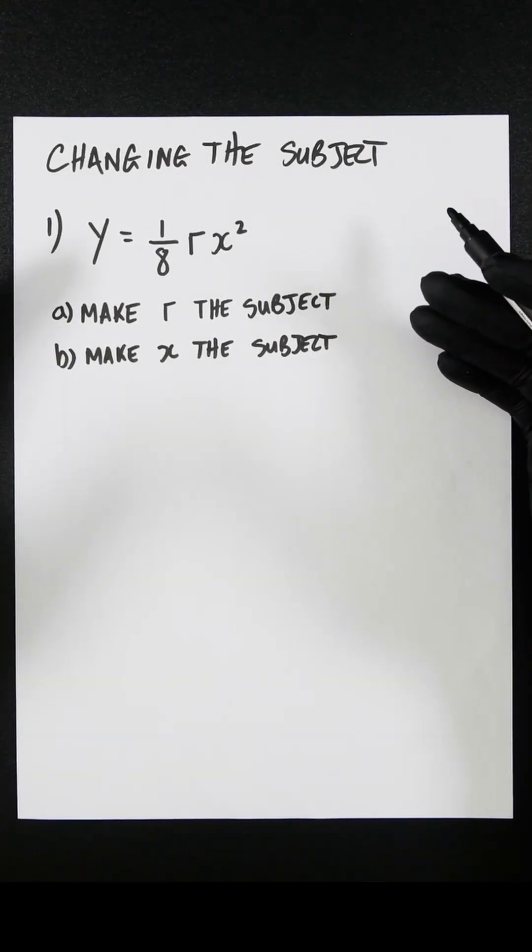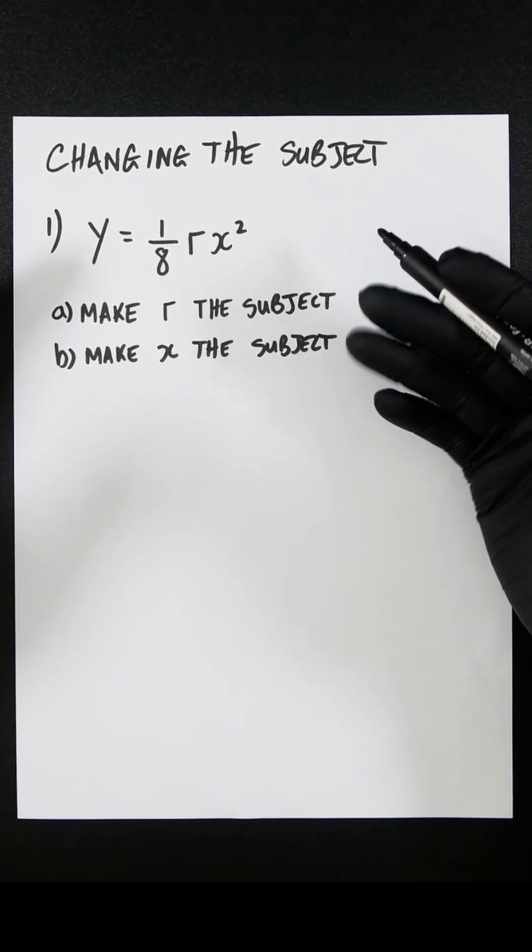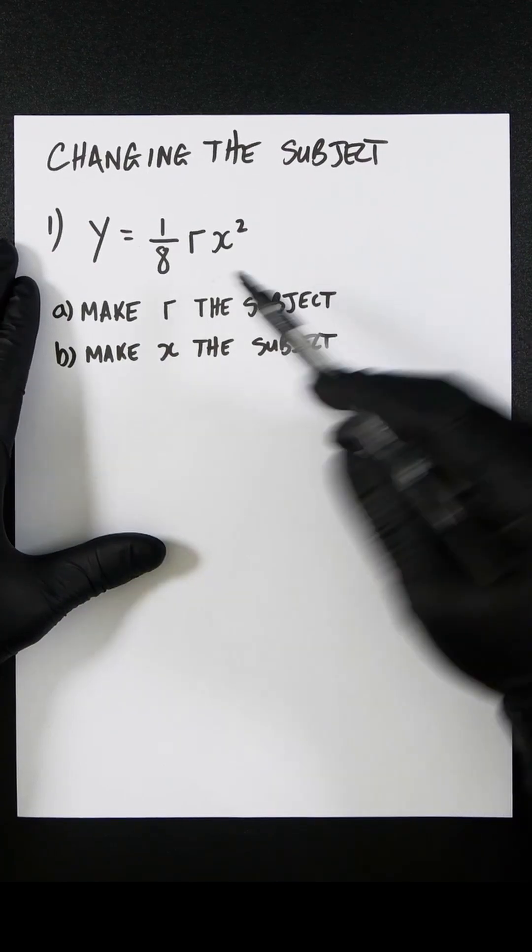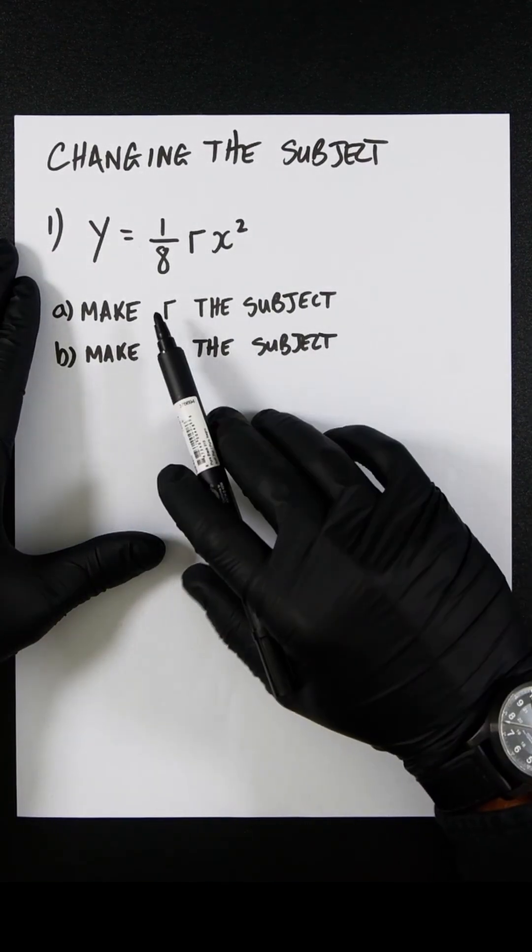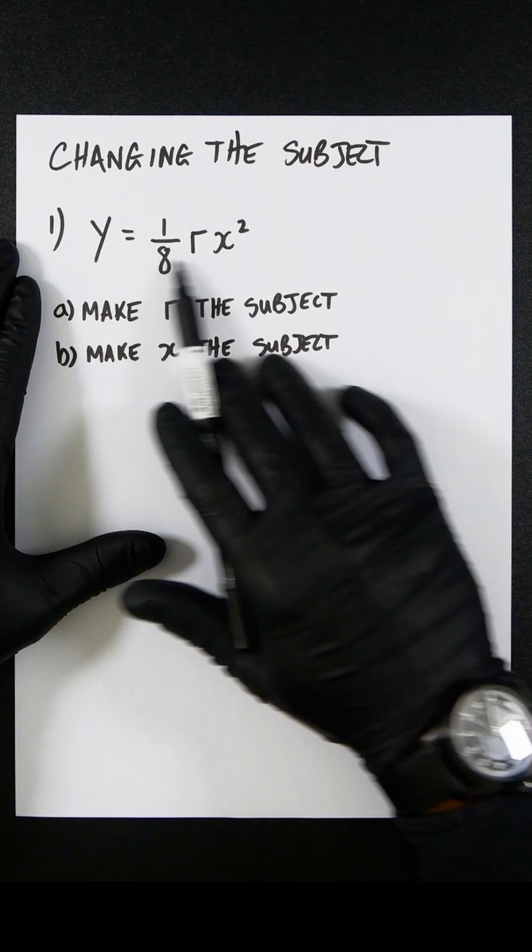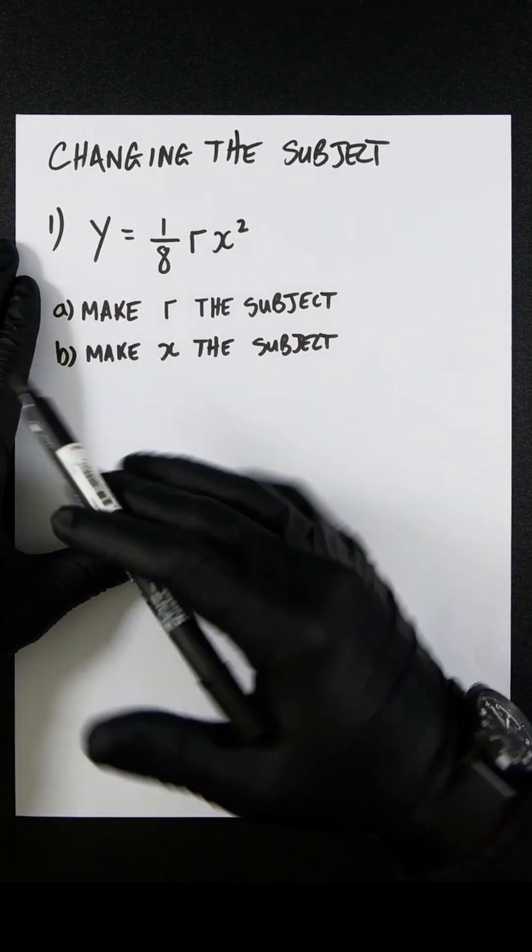Changing the subject. We essentially need to rearrange the equation. So in this first example, it's asking us to make r the subject. So it means that instead of it being y equals whatever, we're going to make it r equals whatever.